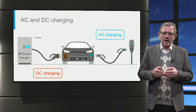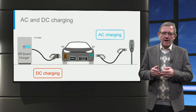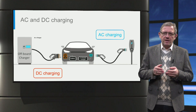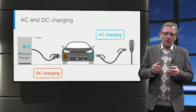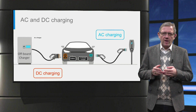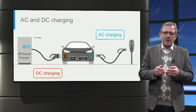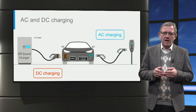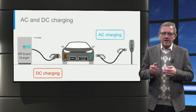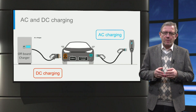We hence have both AC and DC charging of electric cars, depending on whether the on-board or off-board charger is used. While Tesla cars use the same vehicle inlet for both AC and DC charging, all other manufacturers have separate vehicle inlets for AC and DC charging, as shown in the picture.